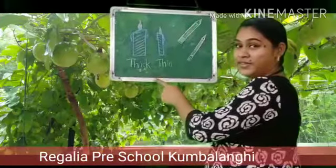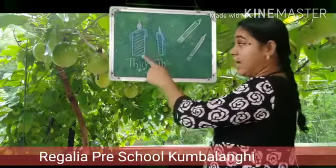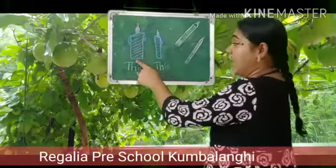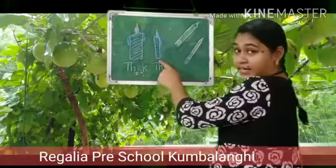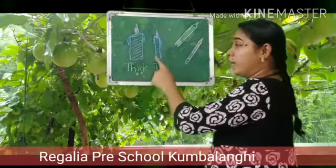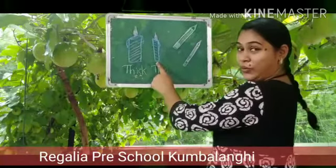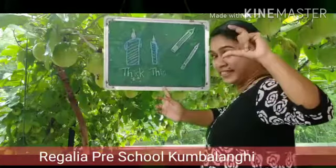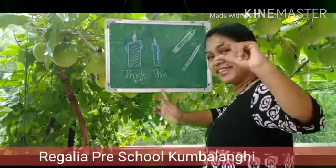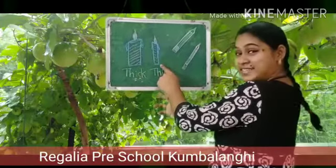Look at this board. Can you all see? Two candles are here. This is a thick candle and this is a thin candle. Say: thick, thin. Thick, thin. This candle is thick and this candle is thin.